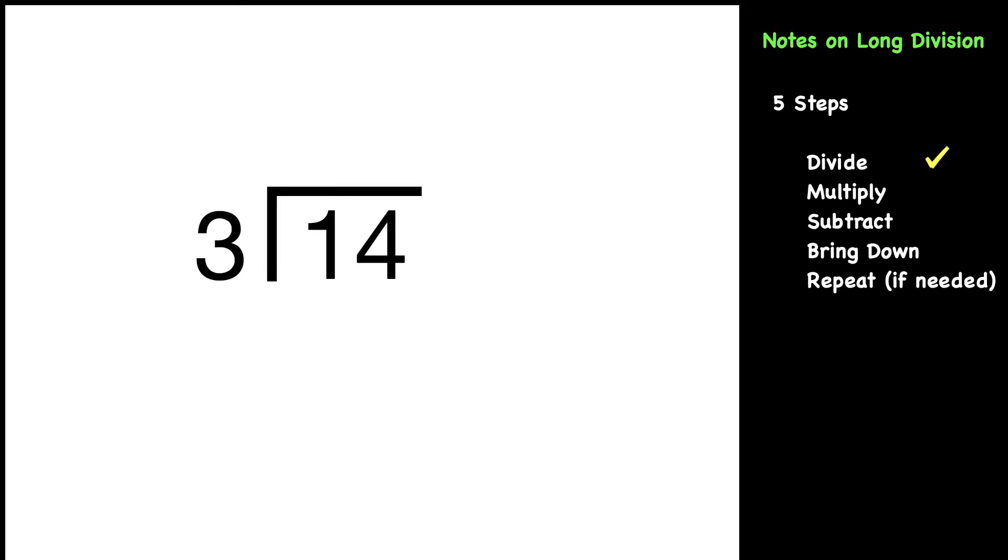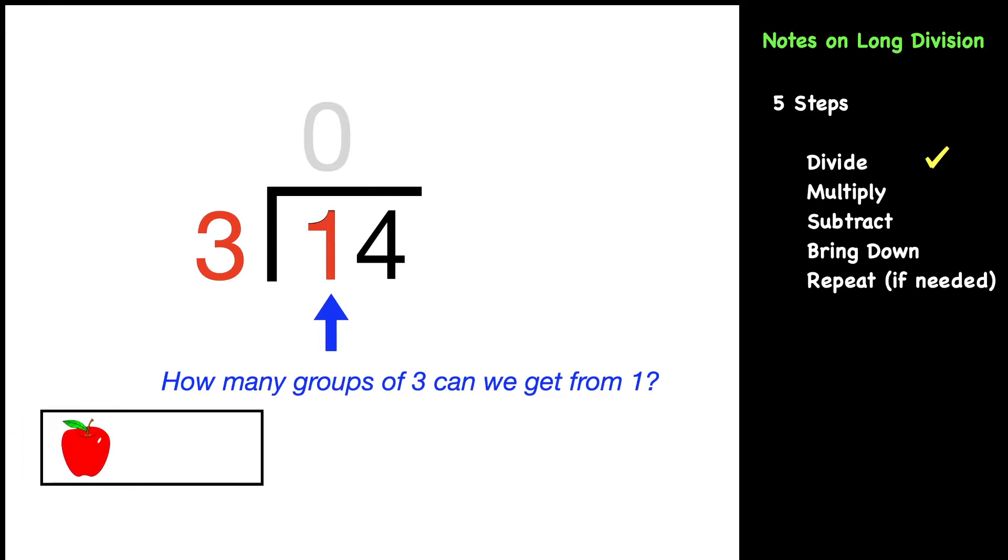We'll start with divide. Our problem is 14 divided by 3. We want to start by going digit by digit from the left side of the dividend to the right. How many groups of three can we get from the one? The answer to that is zero. We put that right on top. If you have one apple, you can't get three apples from one apple.